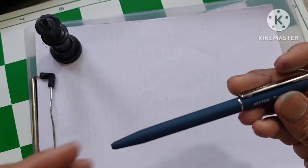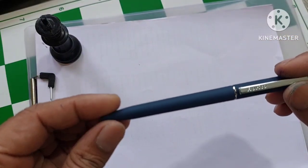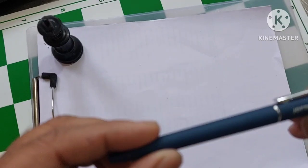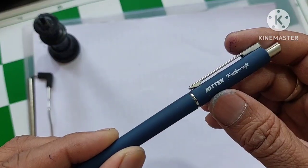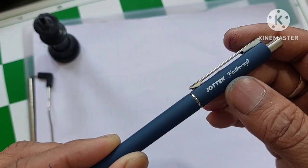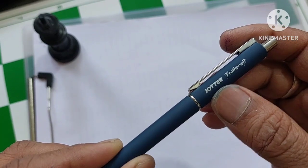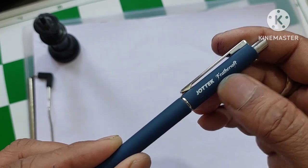It has the looks similar to that of Jeter pen from Reynolds. Here you can see the body of the pen. On the body it is mentioned it is Jyotec Feather Soft.